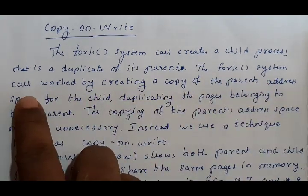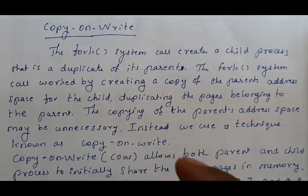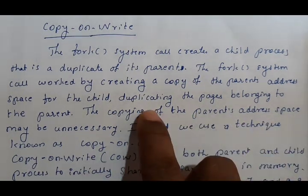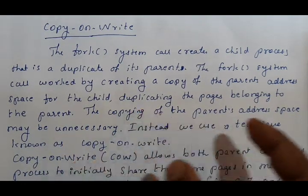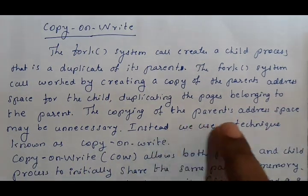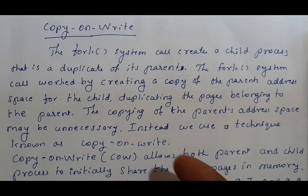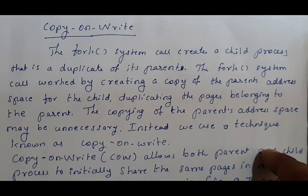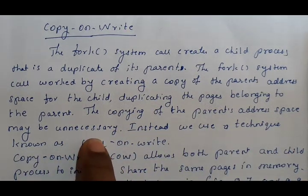The fork() system call works by creating a copy of the parent's address space for the child. Whatever address space the parent process has, the child process also duplicates those pages. However, copying the parent's address space may be unnecessary — sometimes it is not useful to have the same pages in both parent and child.